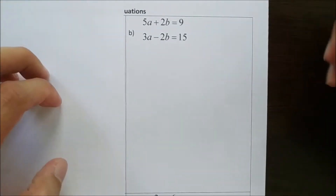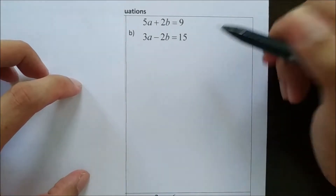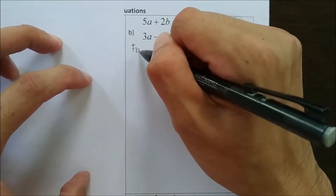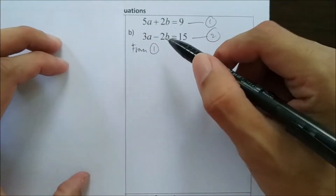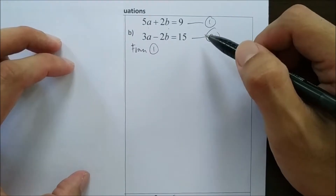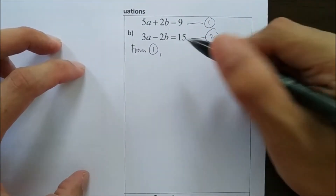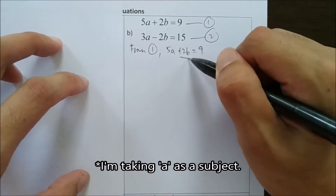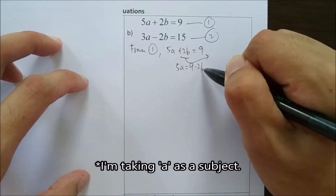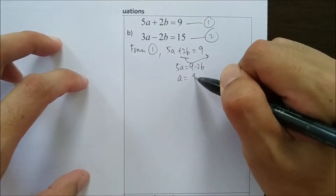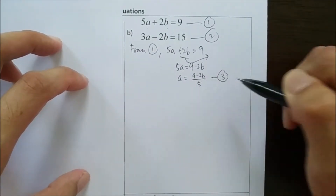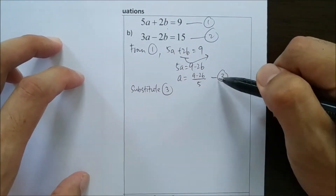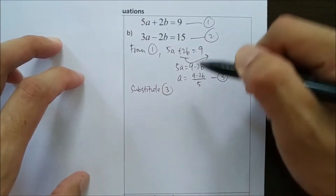Now we go to equation B: 5a plus 2b equals 9, and 3a minus 2b equals 15. Again, first we label these equation 1 and equation 2. We can take any equation — let's say I take equation 1. I'll try to find a subject: A as a subject or B as a subject. I'll take from equation 1: 5a plus 2b equals 9. If I take A as the subject, I move 2b to get 5a equals 9 minus 2b, so a equals 9 minus 2b over 5. Let this be equation number 3.